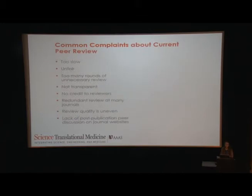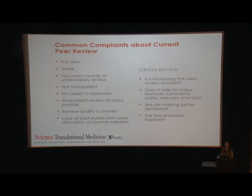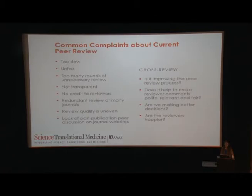During the peer review process, we hear a lot of complaints from reviewers: it's too slow, there are too many rounds, we don't know what's going on, reviewers don't get credit, review is not even, it's biased, and there's no post-publication discussion. What can we do about this? One thing the science family has started is cross-review, where you receive the comments from the other reviewers and essentially do a review of the review process. We want to know if this is improving the peer review process — are we making decisions in a better manner, are reviewers happier, and does this help make review more fair, more polite, more relevant? Something to keep in mind: the review you provide should be one that you would want to receive — high quality, timely, and fair.